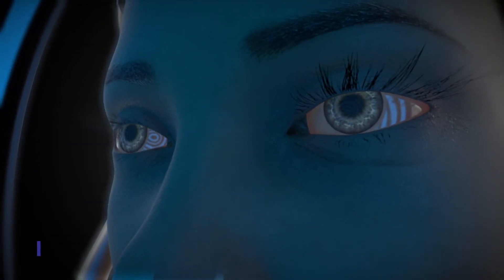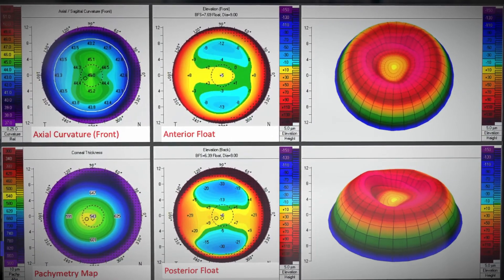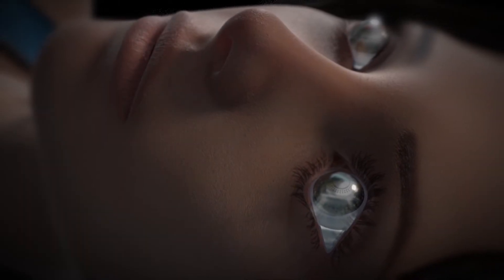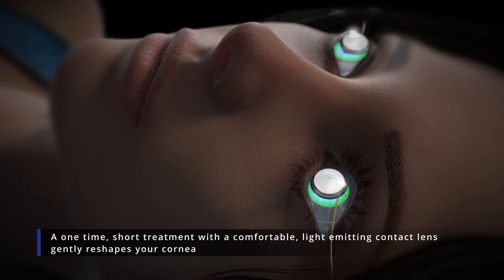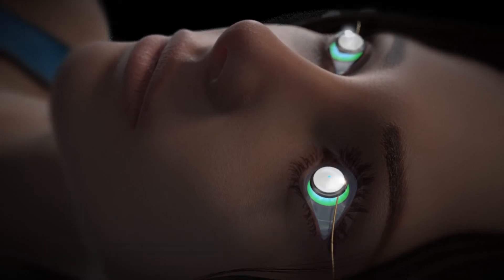The doctor will first measure your eye and build a computer model of it to help calculate exactly how to apply the light for your correction. She will then put a few drops of vitamin B2 in your eye and apply a specialized contact lens connected to a tiny fiber optic that will deliver a precise pattern of light to your cornea for a few minutes.